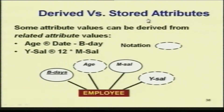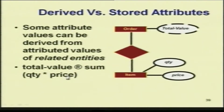Derived versus stored attributes is another type of attribute description. Some attribute values can be derived from related attribute values. For example, I have birthdate and monthly salary. From birthdate I can derive the value age, and from monthly salary I can derive the yearly salary. These two are derived attributes — the value is not given directly, only derived from known values.